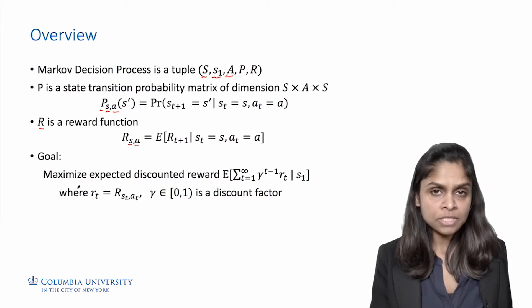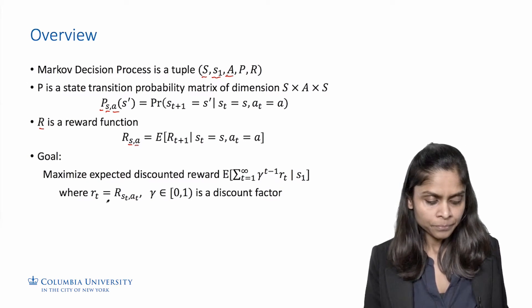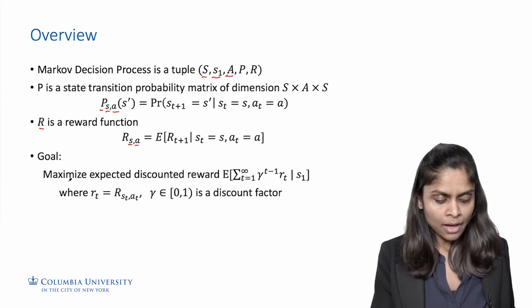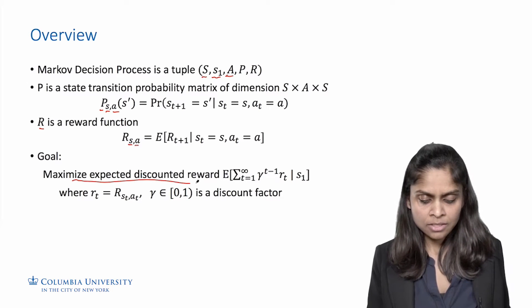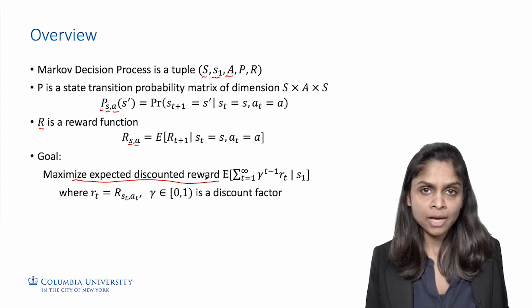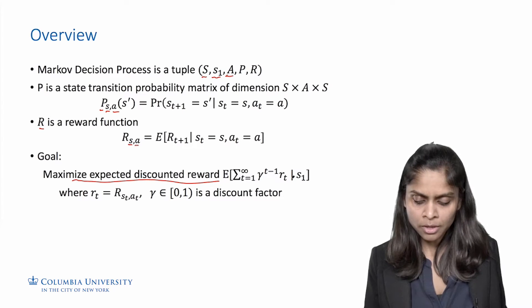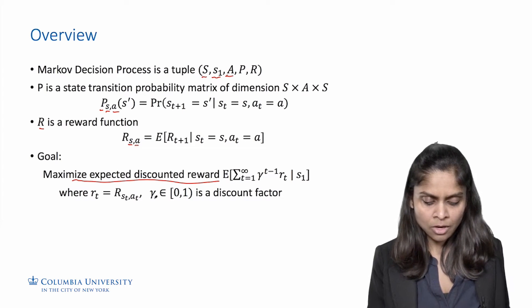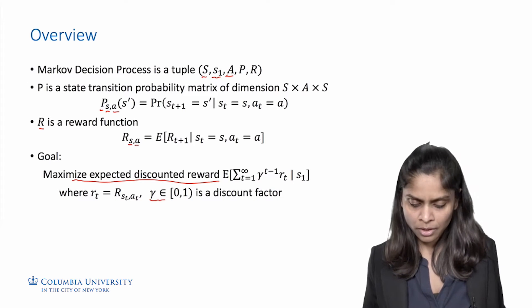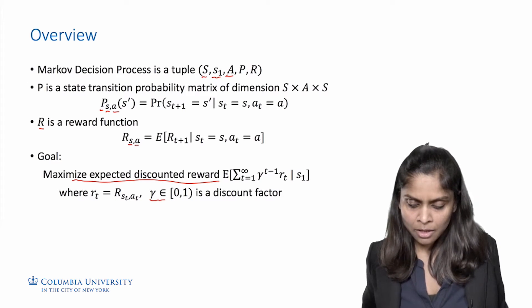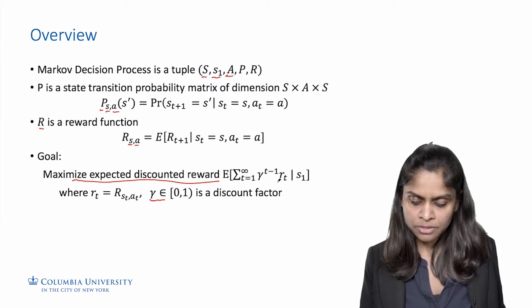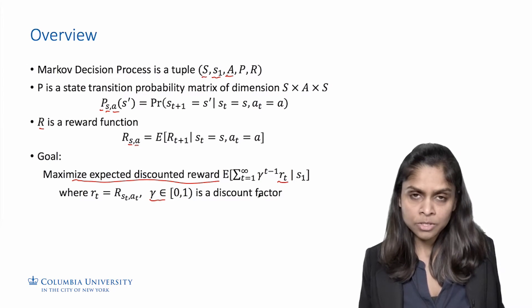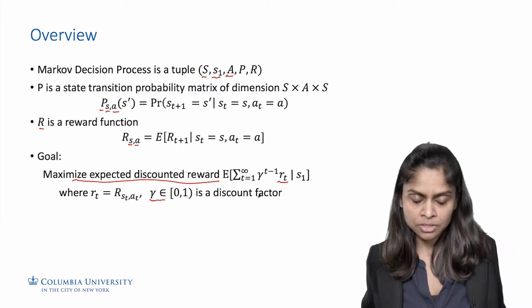Finally, we have to specify a goal of the MDP. From now on, we will consider only the expected discounted reward goal. The goal is to maximize expected discounted reward, where the discount factor is some fixed number gamma between 0 and 1. The expectation is taken over the randomized rewards, the state transitions, as well as any possible randomization in the agent's actions.